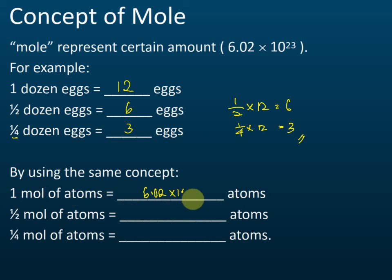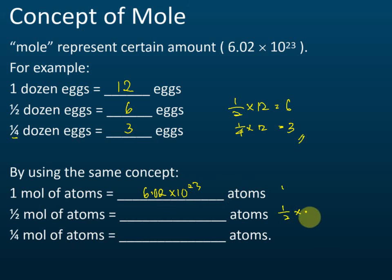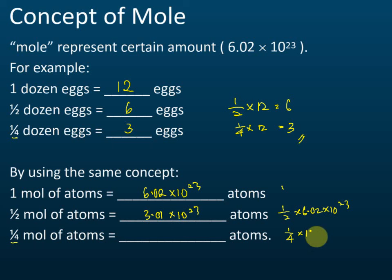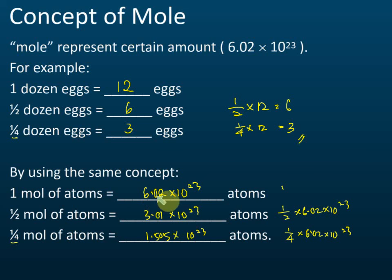One mole of atoms equals 6.02 times 10 to the power of 23 atoms. Half a mole of atoms: divide by 2 to get 3.01 times 10 to the power of 23. A quarter of a mole: 1/4 times 6.02 times 10 to the power of 23 equals 1.505 times 10 to the power of 23. Mole represents a number, and 6.02 times 10 to the power of 23 is that number.